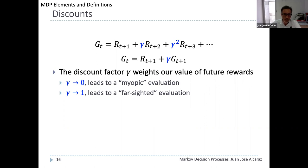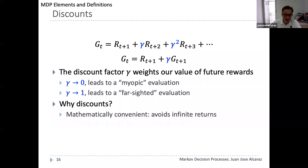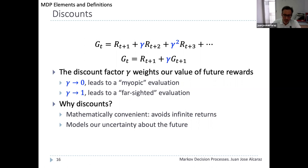Why use a discount rate? First, it is mathematically convenient — it avoids infinite returns. Second, gamma models our uncertainty about the future: the longer we forecast, the more uncertain we are, so rewards more distant in the future have less importance in our decisions and are given smaller weight.